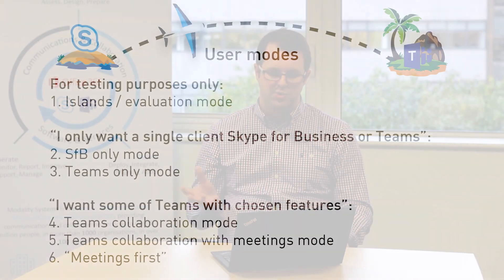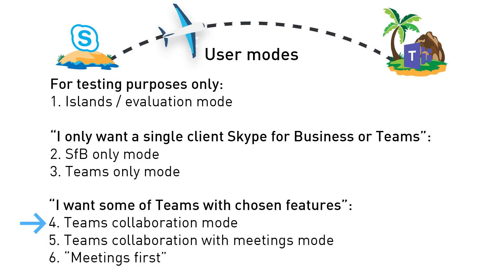But you've also got three options for mixing the two for users. The first one is just to run Teams in what's called Collaboration mode, or teamwork mode. In that mode, Teams is used for chat-centric, file-centric collaboration — that's your workspace for a project. But as soon as you do an audio-video meeting, a conference call, or a user call, that's still in Skype for Business. That's Teams Collaboration mode.